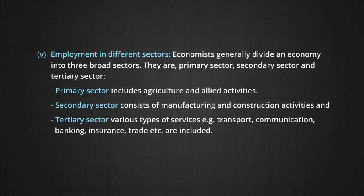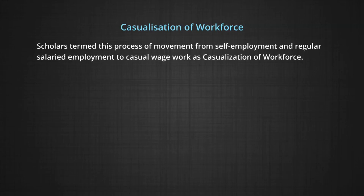Economists generally divide an economy into three broad sectors: primary, secondary, and tertiary. The primary sector includes agriculture and allied activities — all activities where exploitation of nature is required. The secondary sector consists of manufacturing and construction activities. The tertiary sector includes various types of services such as transport, communication, banking, insurance and trade. Over the last four decades, there has been a considerable shift of workforce from self-employed and regular salaried employment to casual wage work. Scholars have termed this process as casualization of workforce.